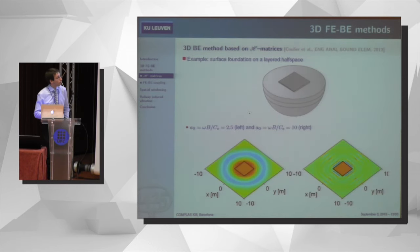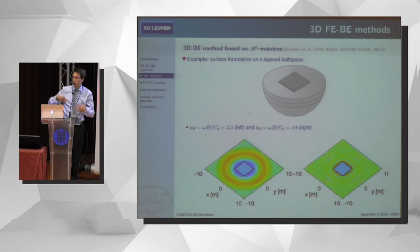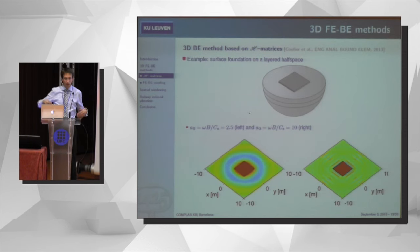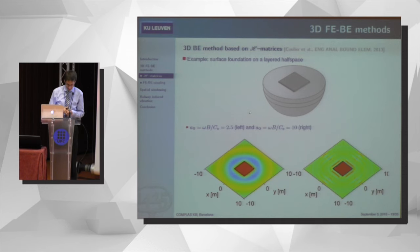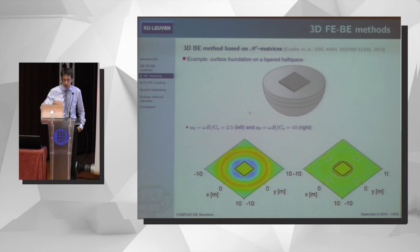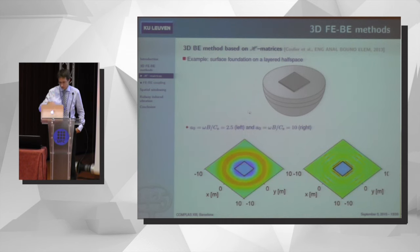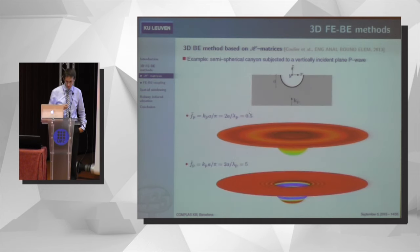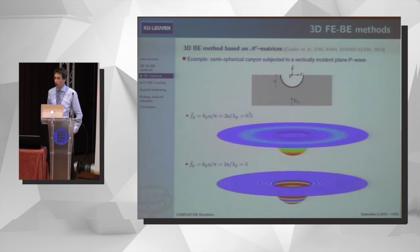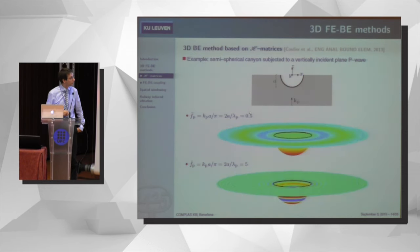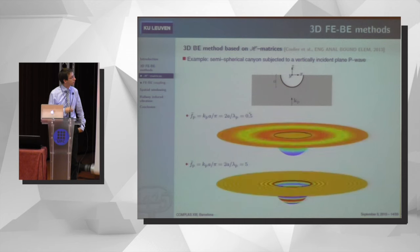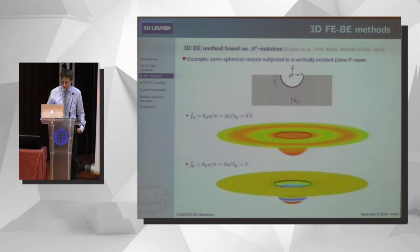As we can increase model size, we're able to go to much higher frequencies than before. This is the wave field due to a unit displacement of a foundation at a particular frequency — a normal incidence case. Another example is scattering of an incident P-wave due to an irregularity, in this case a hemispherical canyon. Once again you can go to much higher frequencies than with a classical approach.